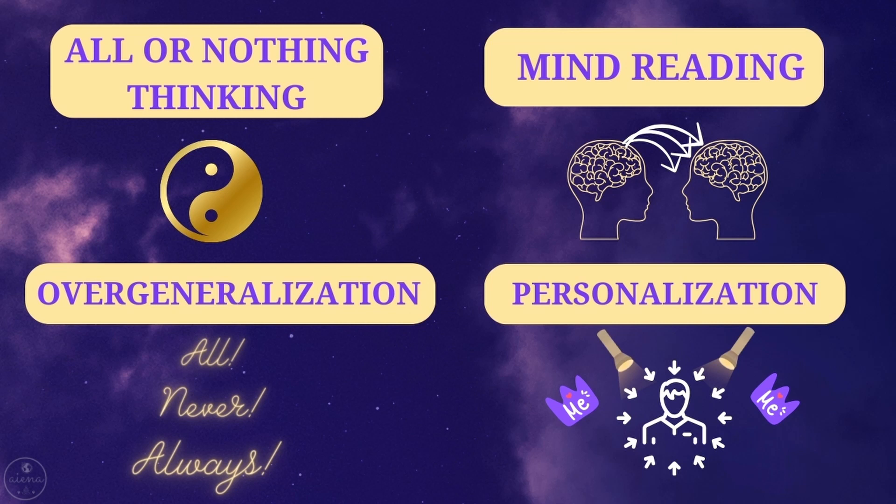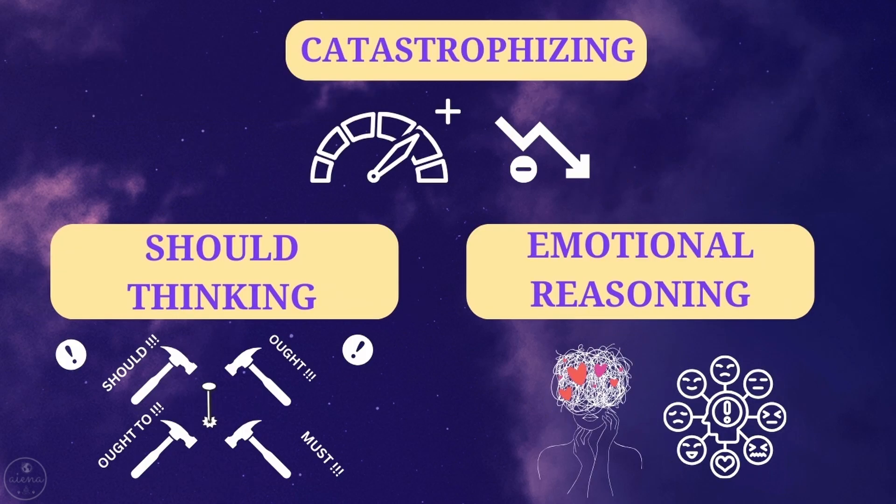In the last video, we discussed what cognitive distortions are — they are exaggerated and irrational negative thinking patterns, those distorted versions of reality that are interfering with our relationships, achievements, and even well-being. Some common cognitive distortions we discussed include all-or-nothing thinking, overgeneralization, mind reading, personalization, catastrophizing, should thinking, and emotional reasoning. Please have a look at that video to learn more about them.